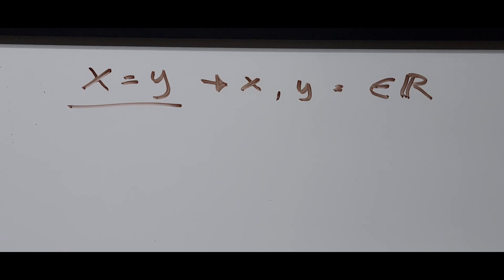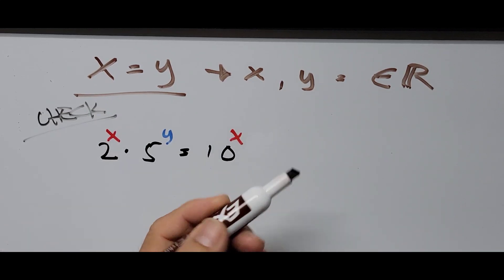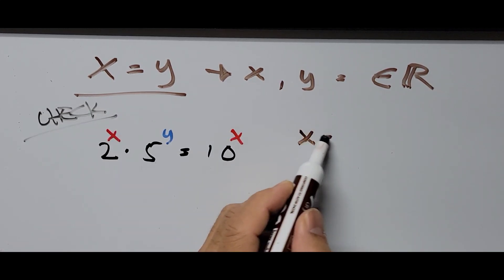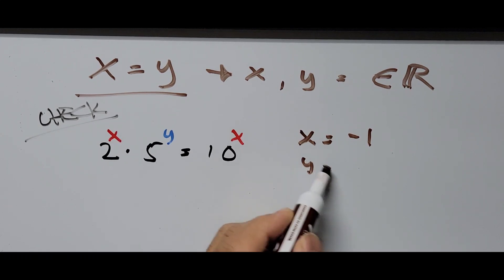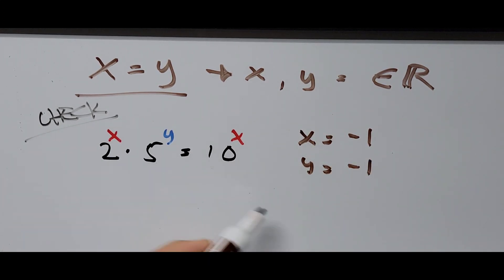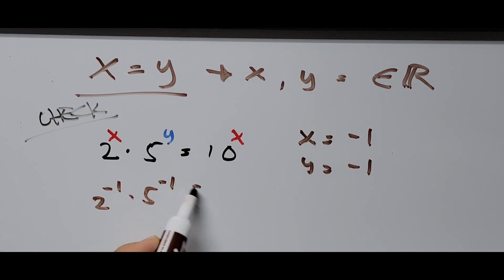Let's check our answer by going back to the original equation. Assigning x equals negative 1, that means y equals negative 1. Substituting into the original equation: 2 raised to the negative 1 times 5 raised to negative 1 equals 10 raised to negative 1.